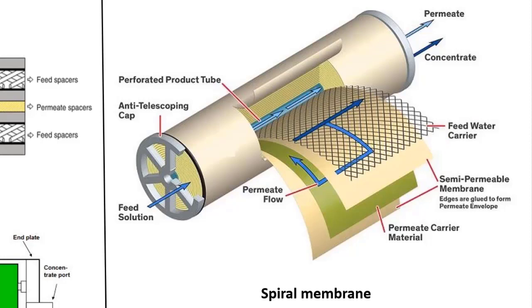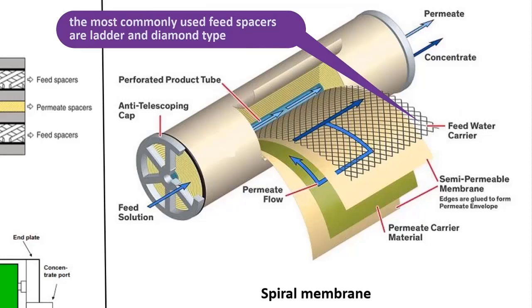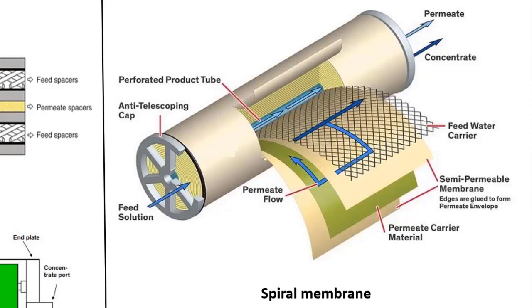There are many different types of feed spacers in the market, but the most commonly used feed spacers are ladder and diamond type. Feed spacers are usually made of plastic polypropylene. The operating mode in this type of membrane is cross flow.